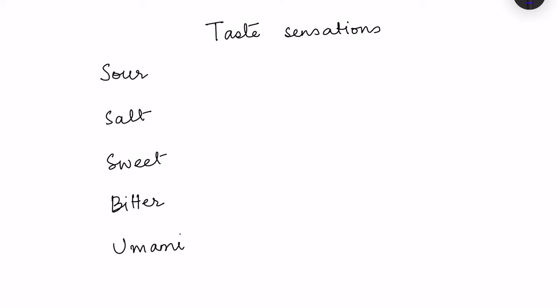Based on the chemicals which are present in the food, we have different types of taste sensations. Basically we have five types of primary taste sensations: sour, salt, sweet, bitter, and umami.